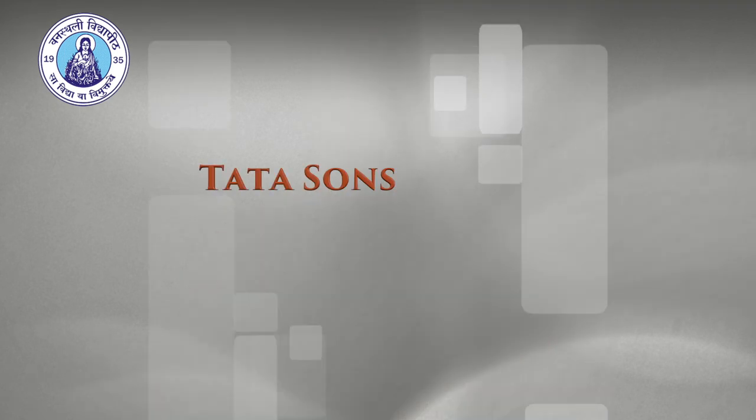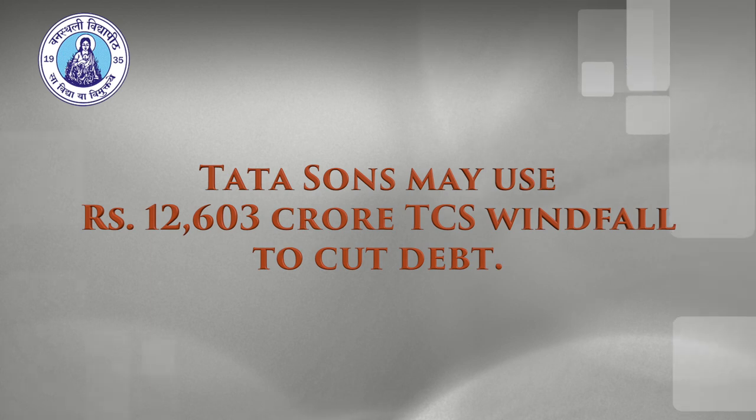Another news item: Tata Sons may use rupees 12,603 crores TCS windfall to cut debt. Here we can discuss that when a company has a huge amount of profit, it has various options — either give high dividend, go for a share buyback plan, or use it for their own expansion. By discussing this news, you can explain to students the structure of the Tata Group — Tata Sons, Tata Trusts, TCS, and other group companies — and relate how this decision is going to have an impact.